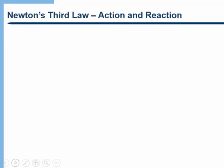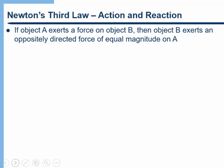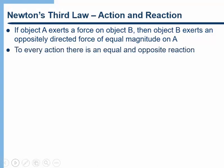What Newton realized is not only do forces occur in pairs, but that those forces are always equal in magnitude and opposite in direction. So if object A exerts a force on object B, then object B exerts an oppositely directed force of equal magnitude on A. You've probably heard Newton's third law said as: to every action there's an equal and opposite reaction. This is actually how Newton specified his law, but Newton was not only inventing physics, he was inventing the language to describe it, so his language is not always as good as what we have today. By action and reaction, Newton meant forces.